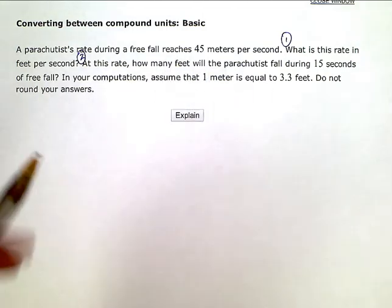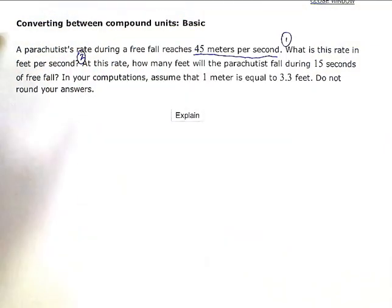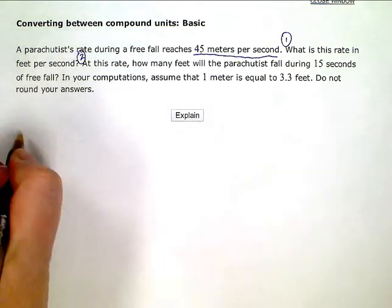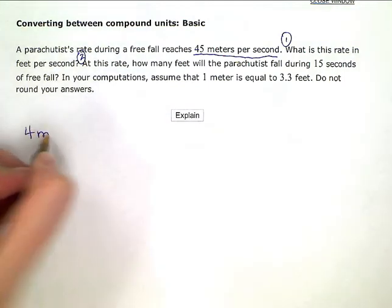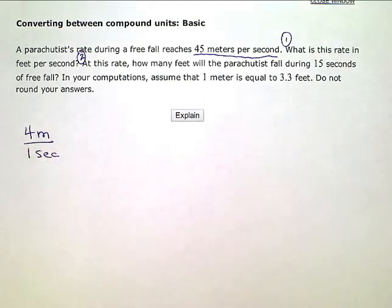So I'm starting with this compound unit. I have 45 meters per second, per one second. And I'm going to write it as a ratio, as a fraction.